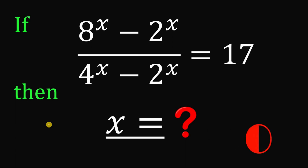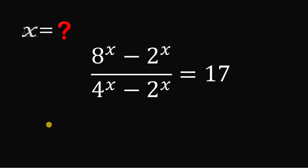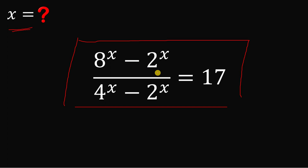Now let's answer this question together. Our goal is to solve for the value of x that satisfies this equation: 8 raised to the power of x minus 2 raised to the power of x, all over 4 raised to x minus 2 raised to x, equals 17.